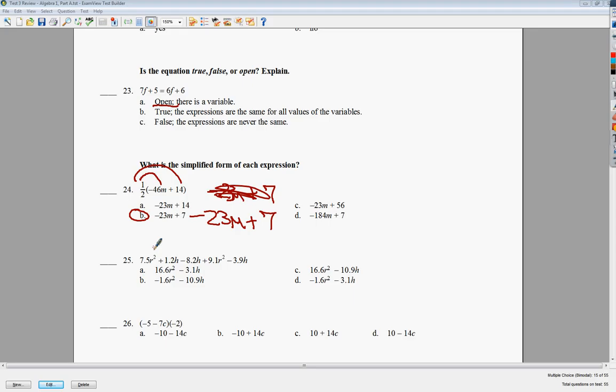25, they want you to combine like terms. My R squared terms are like. So in this case, I need to do 7.5 plus 9.1 because I'm combining my R squared terms together. And I end up with 16.6 R squared. Then I do 1.2 minus 8.2, which is negative 7, and then minus 3.9 because all of those are like terms and end up with negative 10.9H. So my answer for this one is C for number 25.